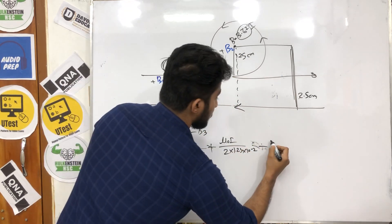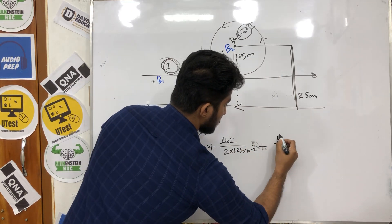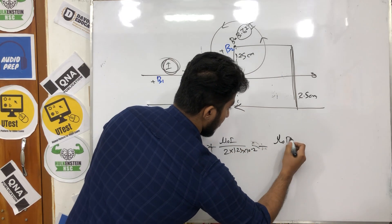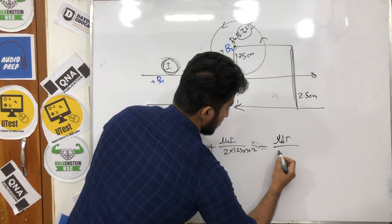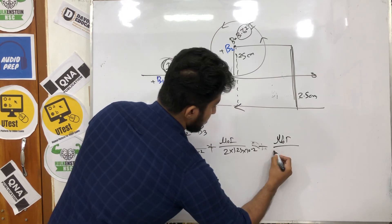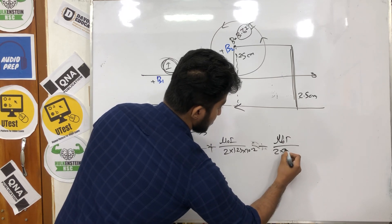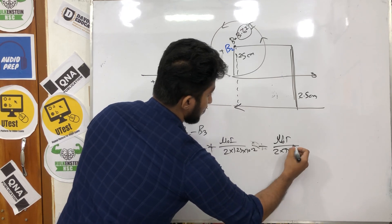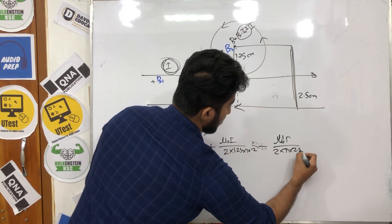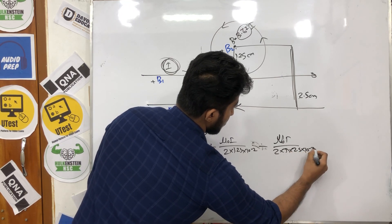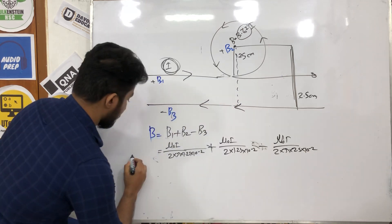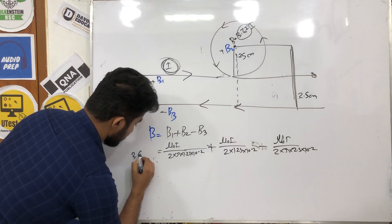So mu naught I divided by twice pi into 1, minus 2, minus 2 — equals 3.67.